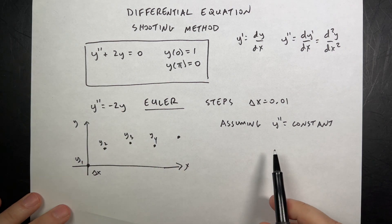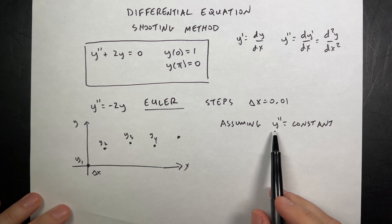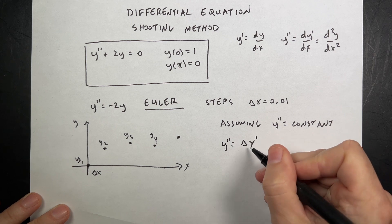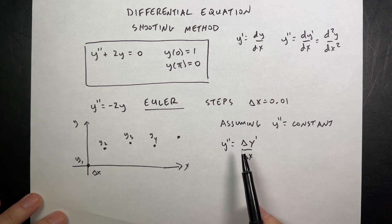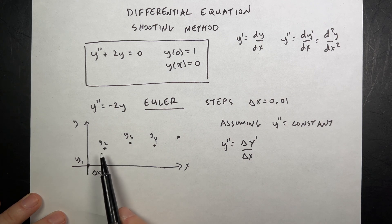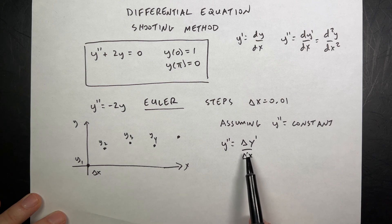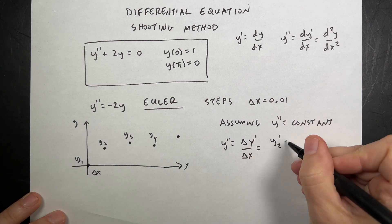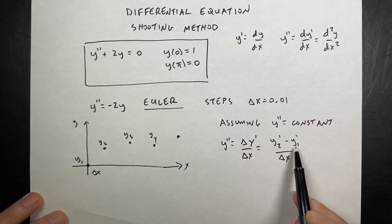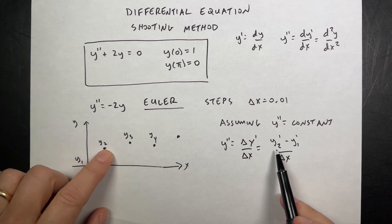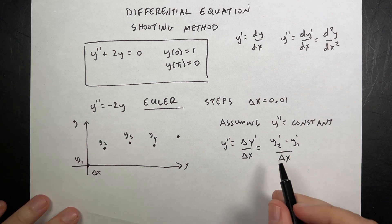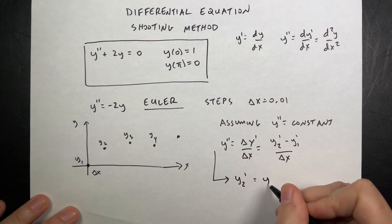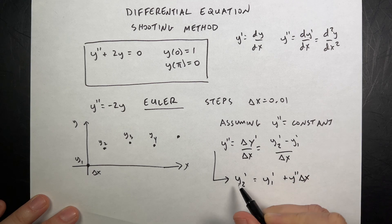Right up here it says y double prime changes, but we're going to assume it's constant. If that's the case, I can write y double prime as delta y prime over delta x — as a finite difference. I can write that as y2 prime minus y1 prime over delta x. So I can solve for y2 prime: y2 prime equals y1 prime plus y double prime times delta x. That's kind of important.